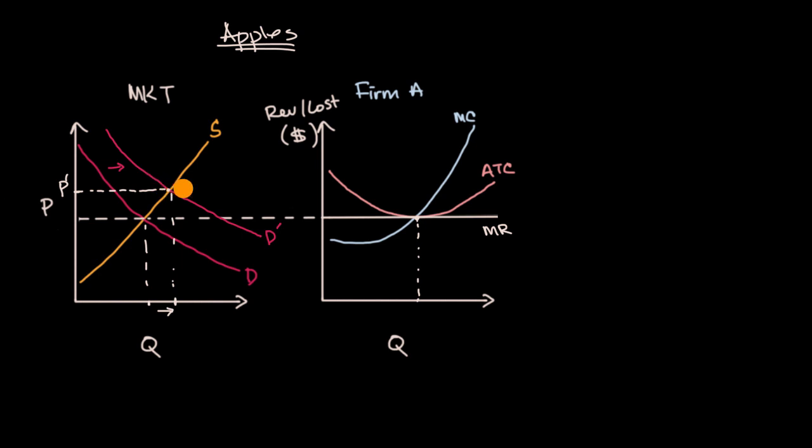At that new equilibrium price, we have a higher marginal revenue curve for firm A. It would be rational for them to produce up until marginal revenue equals marginal cost, because for each of those incremental units up to that point, they're making money. So now it's rational for them to produce at this quantity, let's call it Q prime.